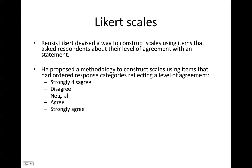The neutral category — you can take it or leave it; we'll get more into that in a minute. A Likert scale is only a scale that includes those four items: strongly disagree, disagree, agree, and strongly agree. They have to be ordered in such a way that they reflect the level of agreement.